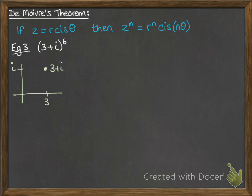So 3 plus i is here, we need to find the modulus and the argument, so the modulus is root 10, and the argument is 0.322 radians.